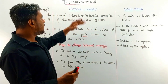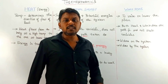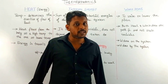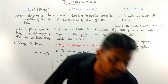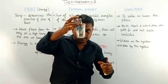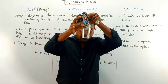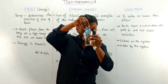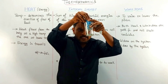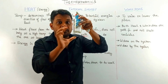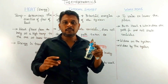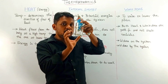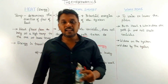Next we will discuss internal energy. Internal energy is nothing but the sum of the kinetic and potential energy of the molecules of the system. Let us imagine this as a cylinder with a piston and piston rod. This space is occupied by a system of gas — the molecules of the gas. The sum of the kinetic and potential energy of these molecules we call the internal energy.